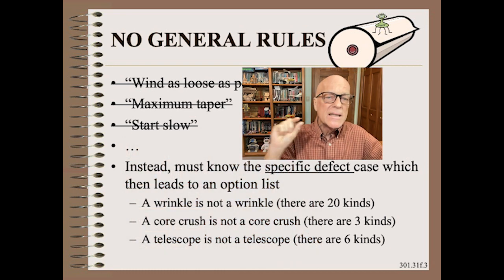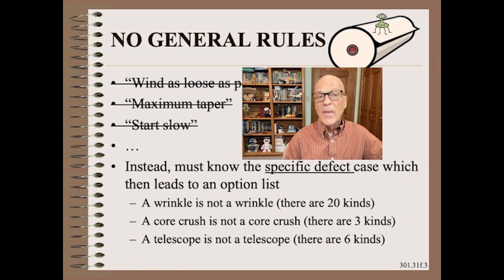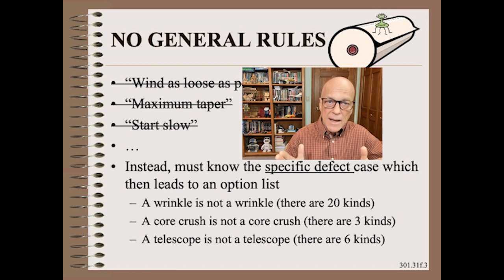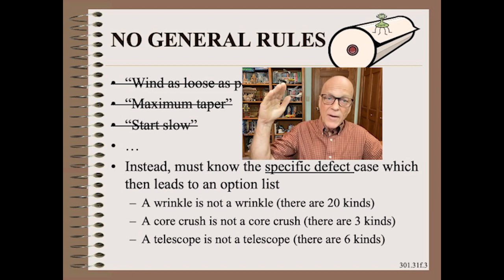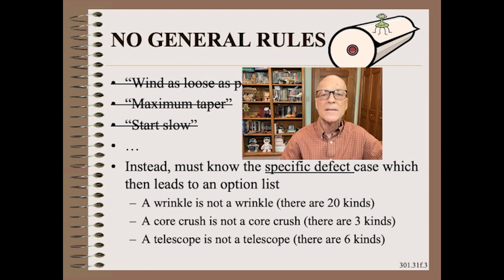By specific, I mean subcase. There are about 20 kinds of wrinkles, 3 kinds of core crush, and about 6 kinds of telescopes. As such, you must know which one you have, because some are tight defects, some are loose defects, and a very rare set are taper defects.